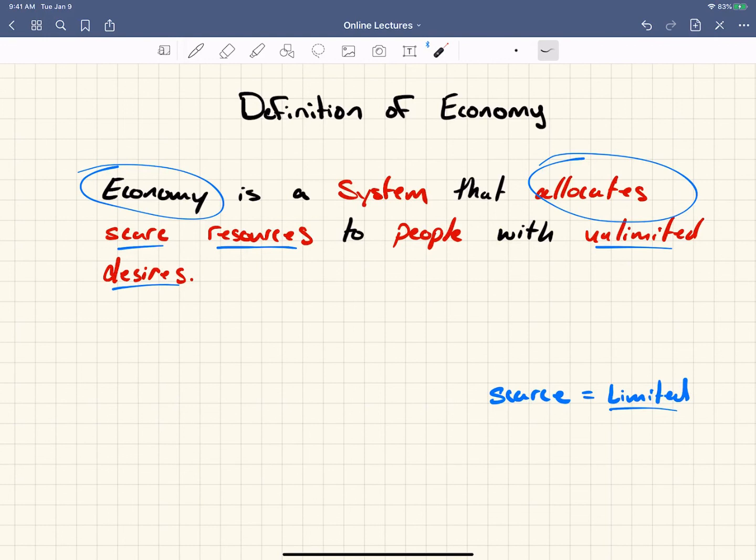And we're going to talk about that in this class. So that's the basic definition of an economy. Again, just one more time. An economy is a system. Lots of different types of economies and systems. For it to be an economy, it has to allocate scarce resources. We're primarily talking about money, and it's to people with unlimited desires. The problem is the resources are scarce, the resources are limited, but the desires are unlimited. This is a problem. And economics tries to solve or at least address that fundamental issue.